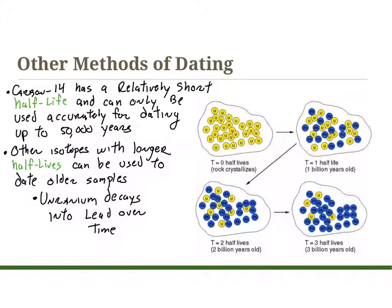There are other methods for dating besides carbon-14, because carbon-14 has a relatively short half-life and can only be used accurately up to about 50,000 years. Other isotopes with longer half-lives can date older samples. For example, uranium decays into lead — uranium is unstable, lead is significantly more stable — through about four or five decay steps, with a half-life of about 1 billion years. After a second billion years there is more lead than uranium, and after a third billion years even more lead than uranium.